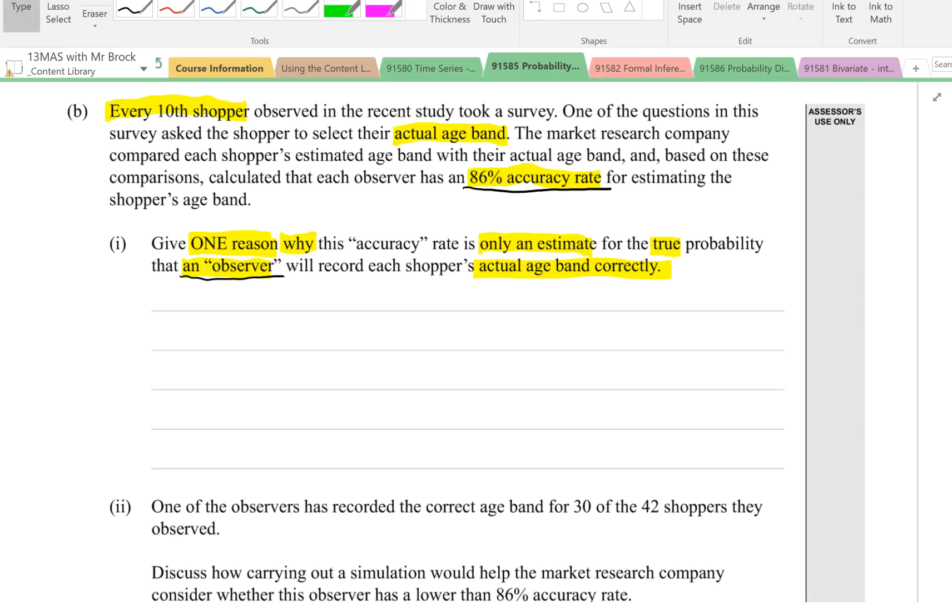We're not told how many people they actually observed. So we're just told that overall they got 86% right. That's an experimental estimate, an estimate from an experiment.